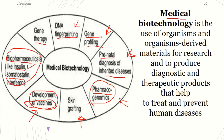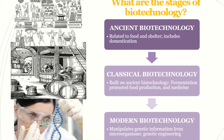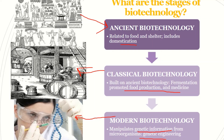So how do we define medical biotechnology? It is the use of organisms and organism-derived materials, either for research or to produce diagnostic or therapeutic products that help treat and prevent diseases. We are either preventing a disease, diagnosing a disease, or treating a disease using medical biotechnology. To summarize the stages of biotechnology: ancient — when people didn't know much but were able to domesticate plants and animals; classical — where people made wines, fermented food, and made medicines; and modern — where we manipulate genetic information through processes like genetic engineering and recombinant DNA technology to come up with products.